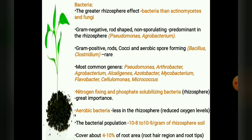The most common genera of bacteria are Pseudomonas, Arthrobacter, Agrobacterium, Alcaligenes, Acetobacter, Mycobacterium, Flavobacterium, Cellulomonas, and Micrococcus, among others, and have been reported to be either abundant or sparse in the rhizosphere.